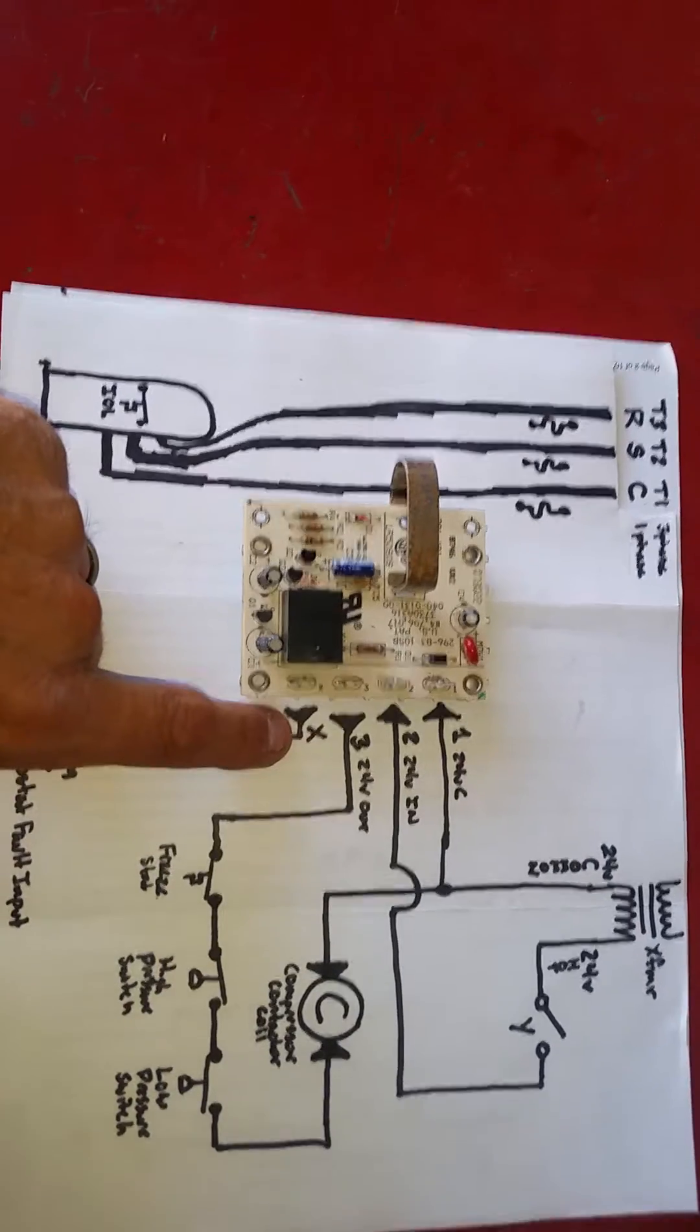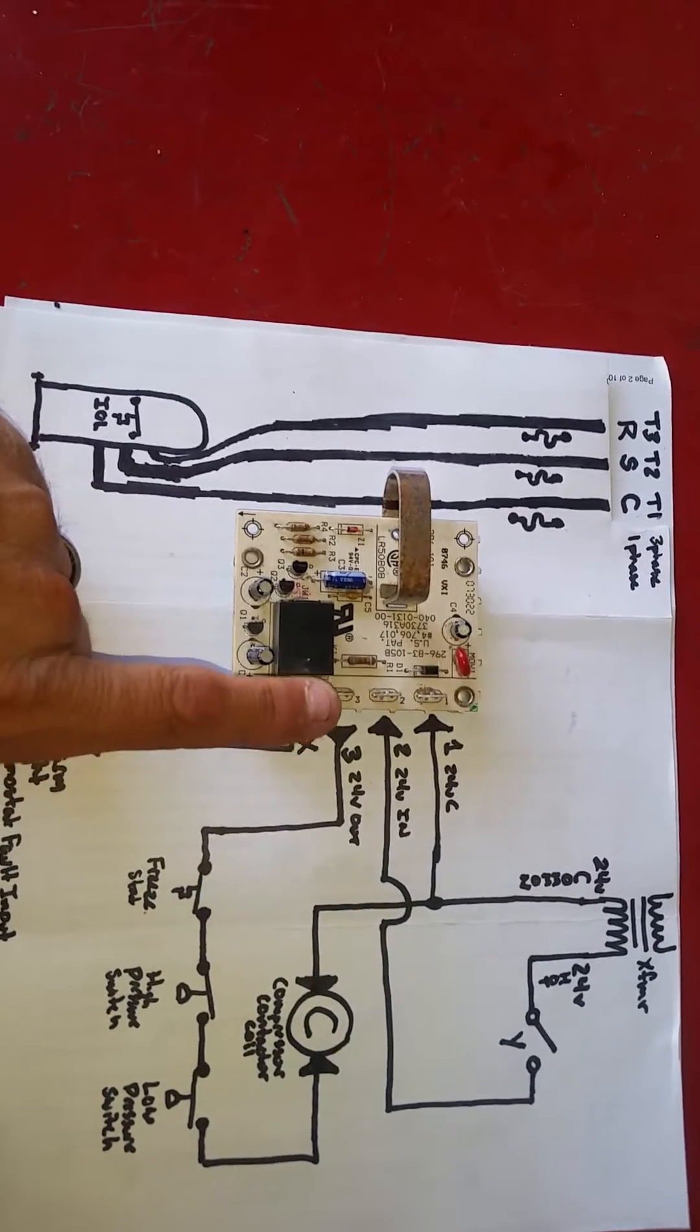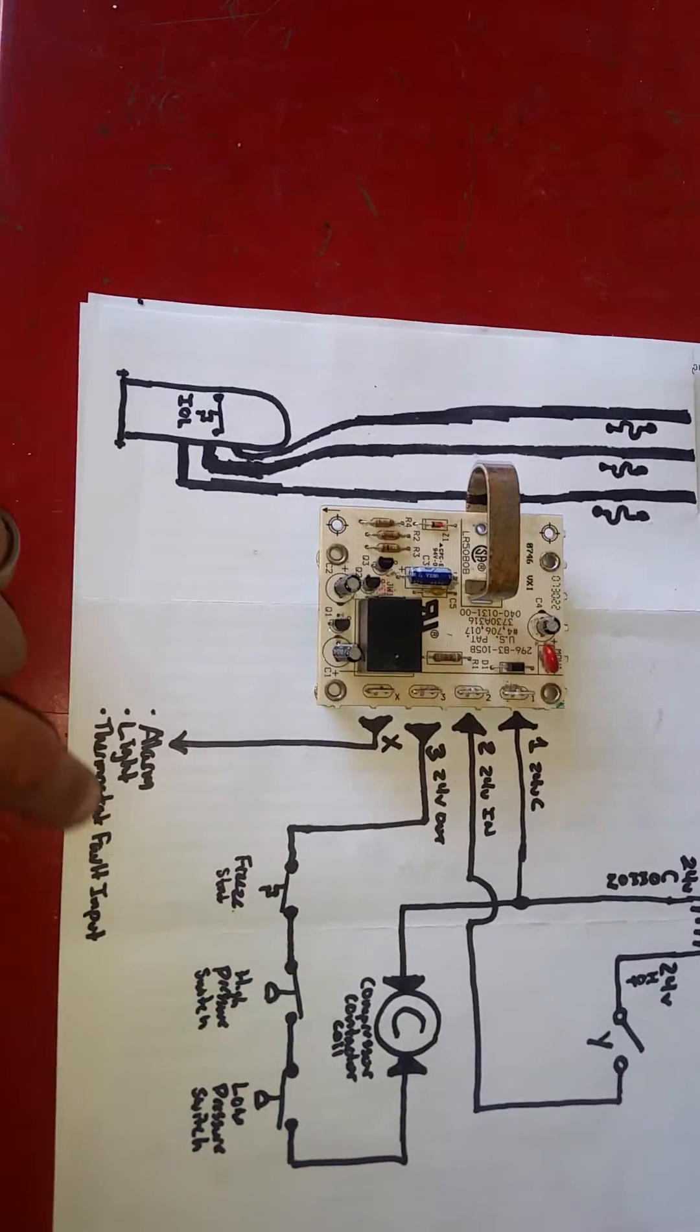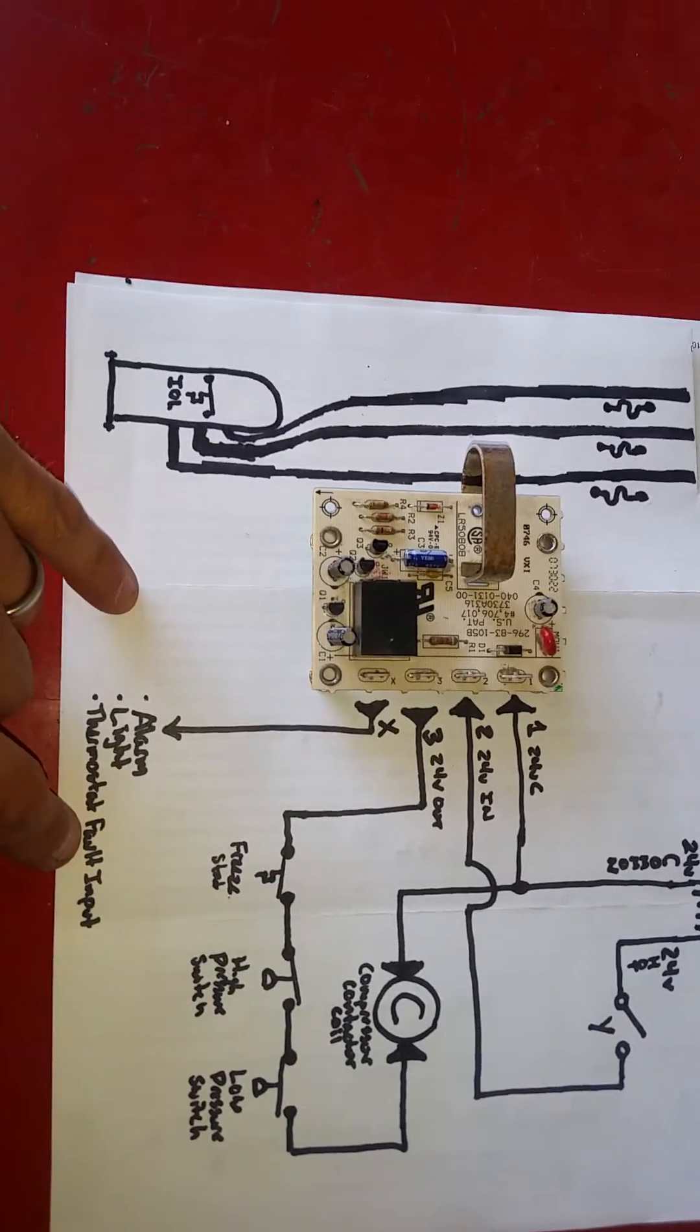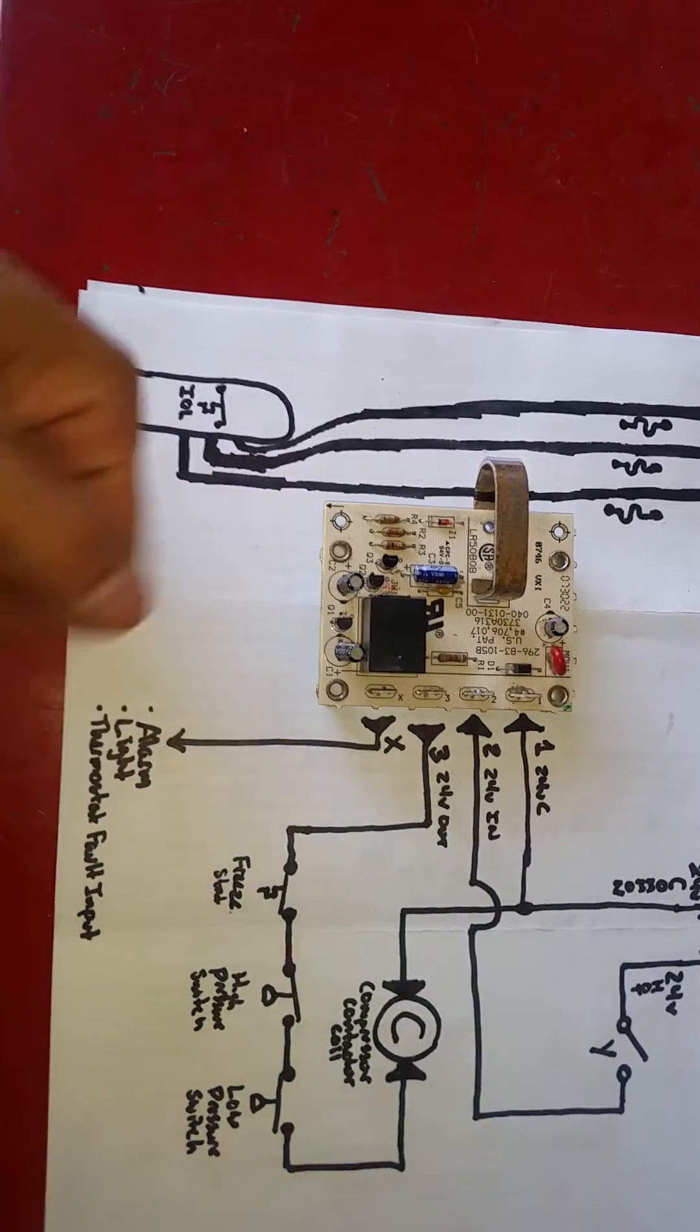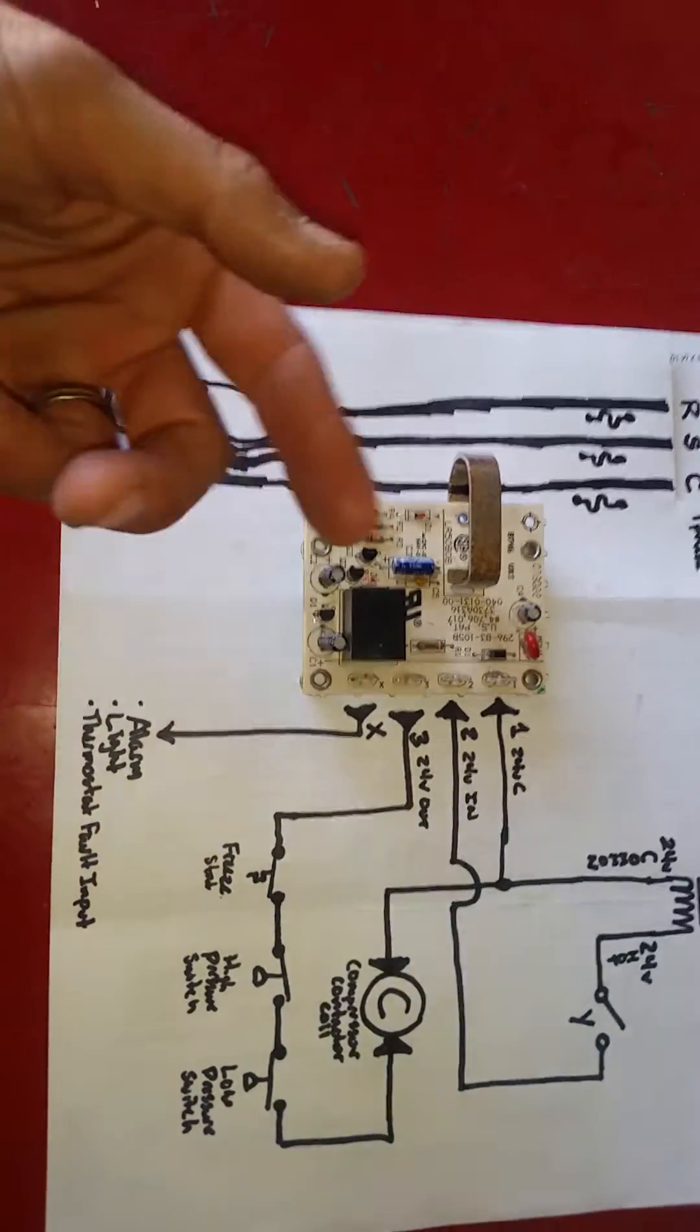X is nothing more. A lot of times you'll see nothing attached to the X terminal. However, if we have a thermostat that has a fault input, like a Lennox has an L terminal, some carrier thermostats or higher-end Honeywell commercial thermostats may have a fault input.